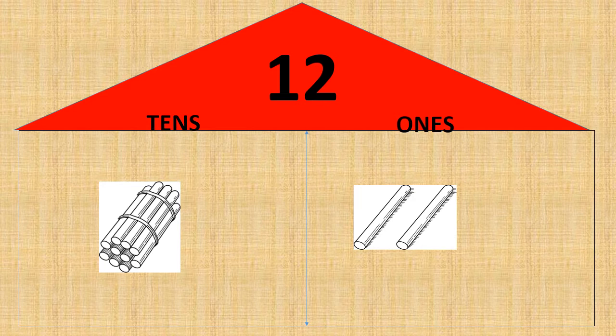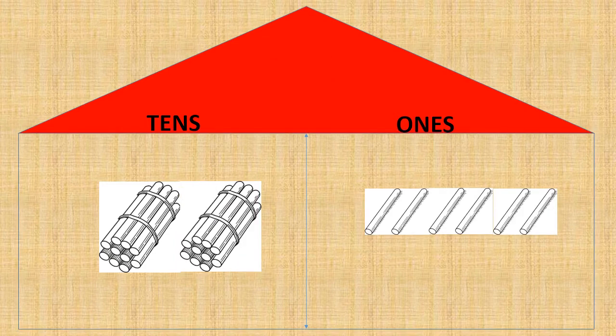Let's move further and see more examples. Now here in this place value house, in tens place, we see one, two — two bundles of tens. And in ones place, we see one, two, three, four, five, six — six ones. Two tens and six ones makes the number twenty-six.